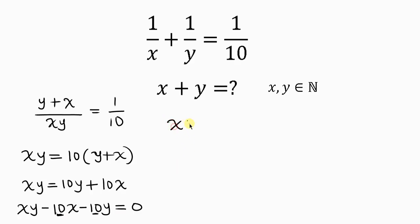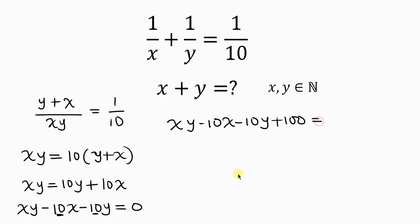So we have xy minus 10x minus 10y plus 100 equals 100. Now let's factorize the left hand side.